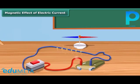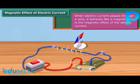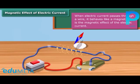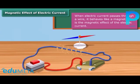The needle gets deflected from its north-south position when current is passed through the wire. When electric current is switched off, the needle returns to its original position. This shows that an electric current produces a magnetic field around it.